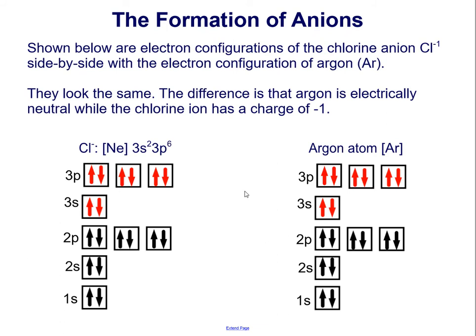Shown below are electron configurations of the chlorine anion Cl⁻¹ side by side with the electron configuration of argon. They look the same. The difference is that argon is electrically neutral while the chlorine ion has a charge of -1. That's the result of gaining an electron but having the same number of protons as it began with.